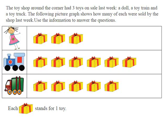The toy shop around the corner had three toys on sale last week: a doll, a toy train, and a toy truck. The following picture graph shows how many of each were sold by the shop last week. Use the information to answer the questions.